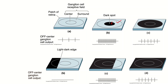We put two check marks here because this is the best condition for the off center cell for maximal firing. We can compare other lighting examples to this template to determine the approximate firing rate. In figure a, the center is light and does not match the dark spot seen in the optimal firing condition for the off center cell, so we put an X there. In the surround we see matching conditions to the optimal, so we put a check there. One check and one X leads us to believe that the off center cell would have a more medial firing rate in this condition, which we do see in the ganglion cell output.